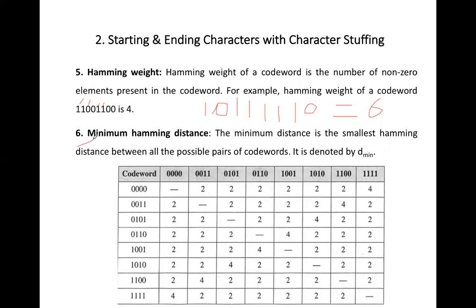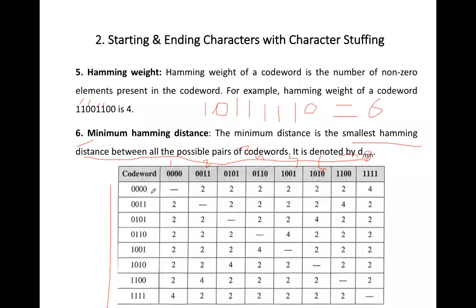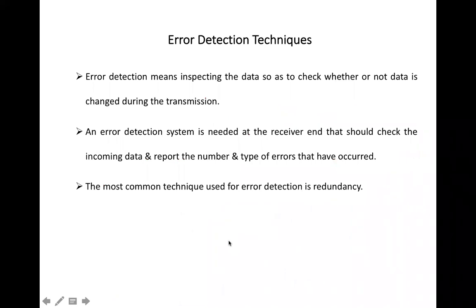The sixth term is minimum Hamming distance. The minimum Hamming distance is the smallest Hamming distance between all possible pairs of code words. It is denoted by d_min. So if you have a set of code words, you find the Hamming distance between every pair and the smallest value among all those distances is the minimum Hamming distance.